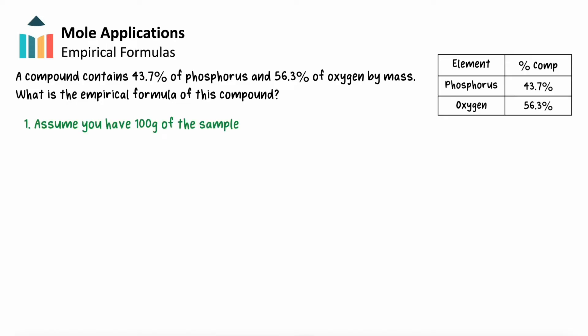First, we'll assume that we have a 100g sample of the compound. Since mole ratios within a compound are independent of how much of the compound we're actually using, we could start with any mass of sample. Starting with 100g is mostly out of convenience, since our percentages would directly translate into mass. We would have 43.7g of phosphorus and 56.3g of oxygen in our 100g sample.